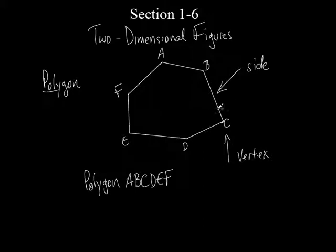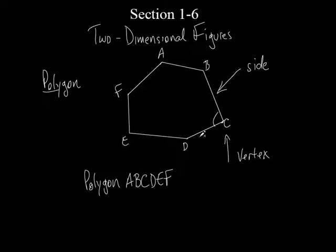Remember we said this is many angles? So you could think of this as angle B, C, D — so that would be a vertex anyway. This would also be a side of the angle. So it's all coming back with angles and rays and all that good stuff.